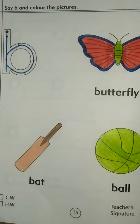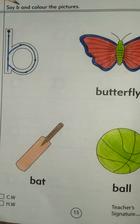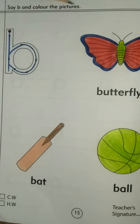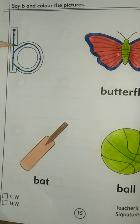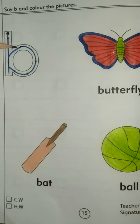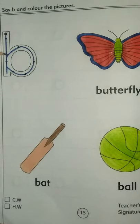Now open page number 15 of your English copy series. Say B and color the picture. B is for butterfly. Wow! It is beautiful.